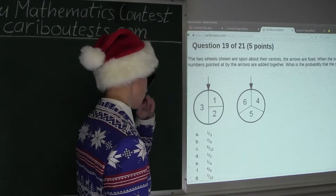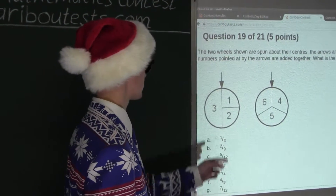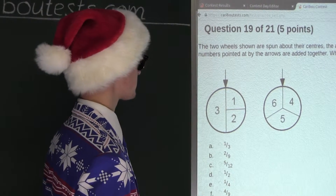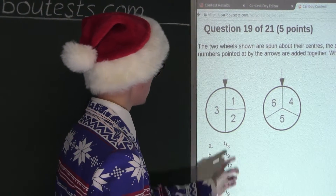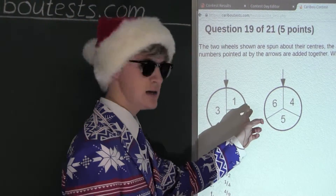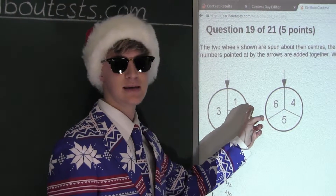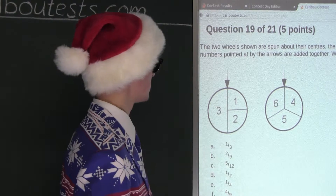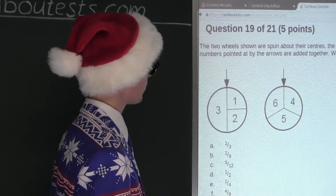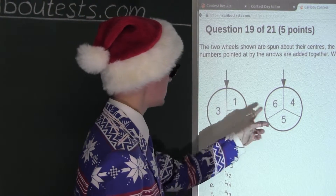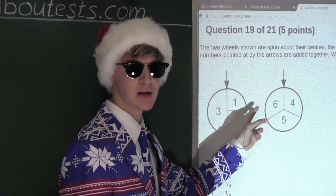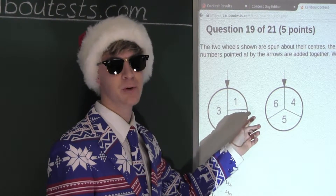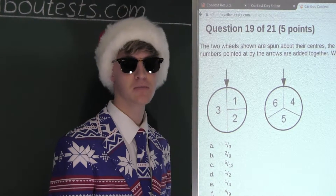Now let's look at the diagram of the two wheels with their arrows. The event of spinning two even numbers is independent from the event of spinning two odd numbers. So therefore, the probability of spinning two even numbers or spinning two odd numbers translates to the sum of both of those individual probabilities.